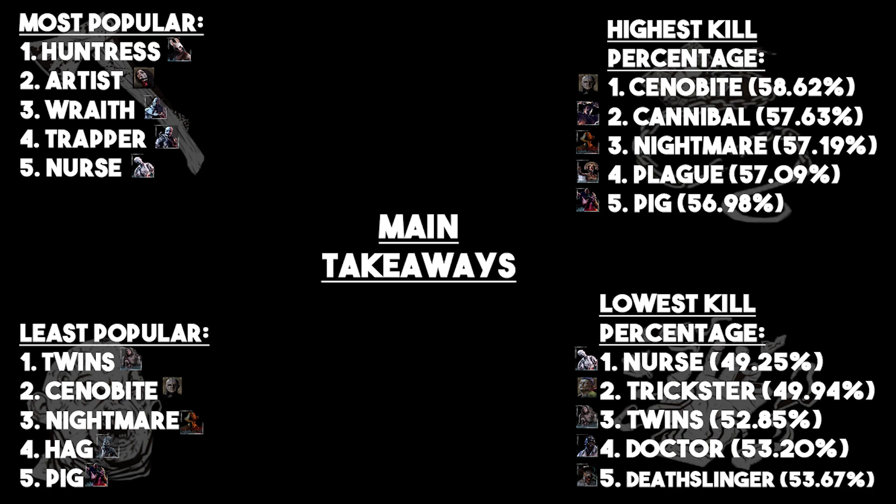The top five most popular killers currently in Dead by Daylight are the Huntress, the Artist, the Wraith, the Trapper, and the Nurse. This isn't super surprising — Wraith and Trapper make a lot of sense as beginner killers. That's not to say only beginners play them, but beginners gravitate toward them overwhelmingly. The base killers in the game are obviously going to be the ones new players gravitate towards.